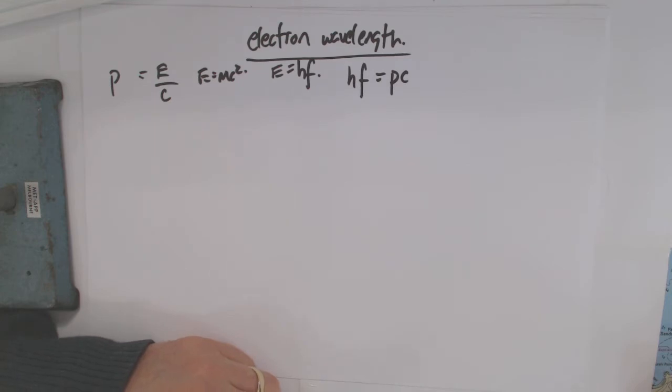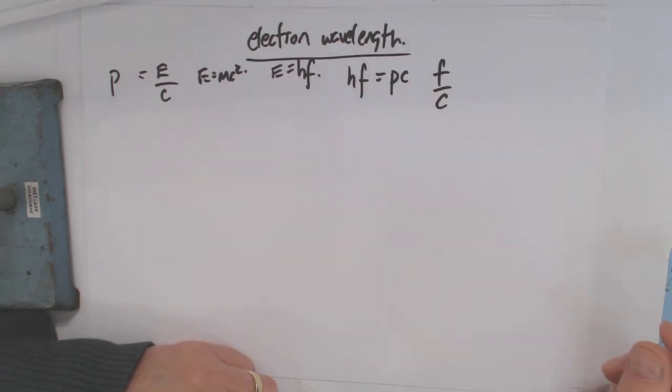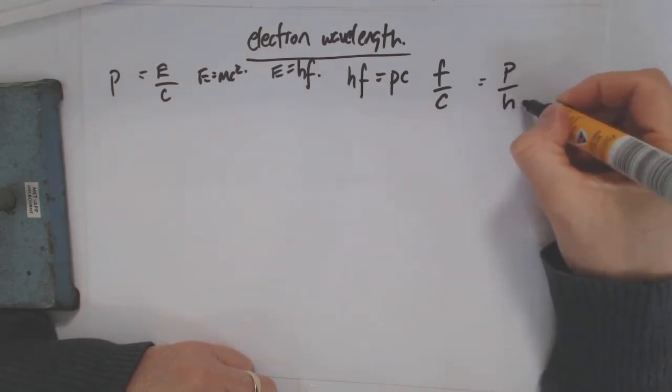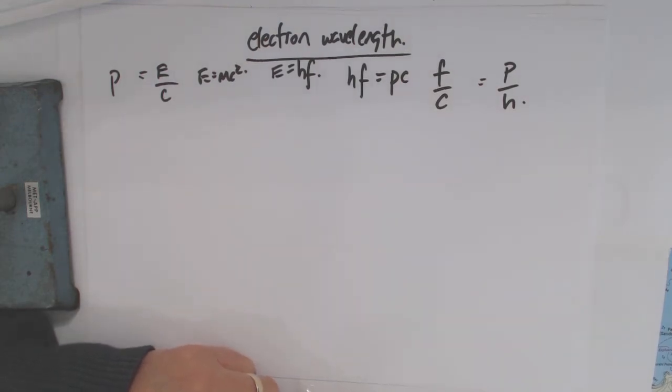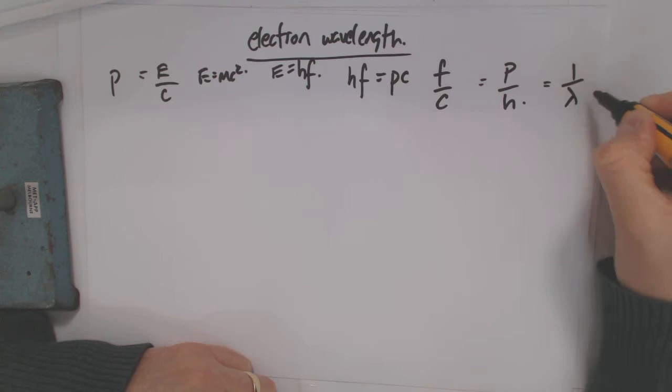HF equals PC. So that means, if we say that F over C, let's just relate that back to F over C. So F over C, this one here, F over C must equal P over H. But F over C is equal to 1 over wavelength, right?